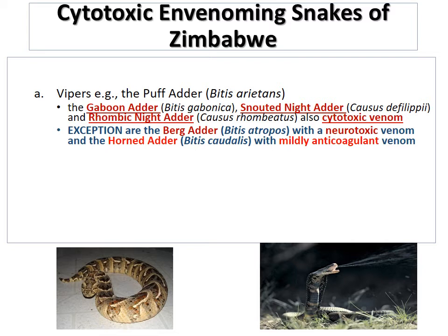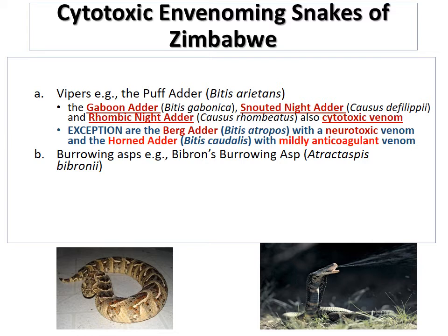There are two exceptions among the vipers whose venom is not cytotoxic: the berg adder, which has largely neurotoxic venom, and the horned adder, found in the southern parts of the country, which has mildly anticoagulant venom. The next group with medically important cytotoxic envenomation are the burrowing asps — specifically Bibron's burrowing asp in Zimbabwe — responsible for a significant number of snake bites, although many go unreported.